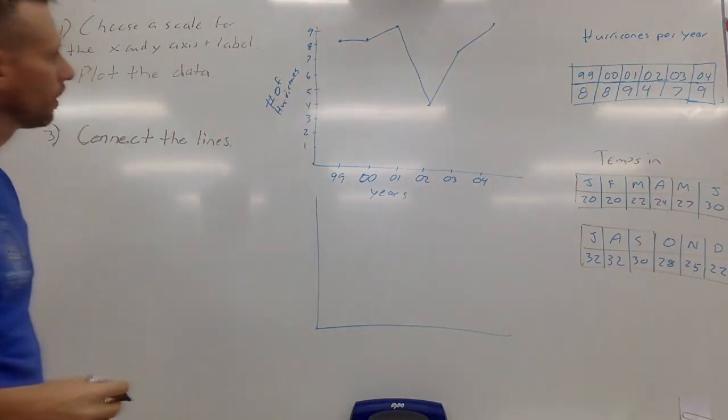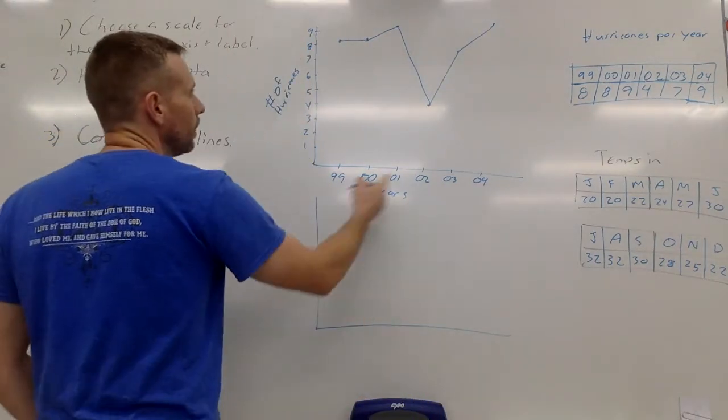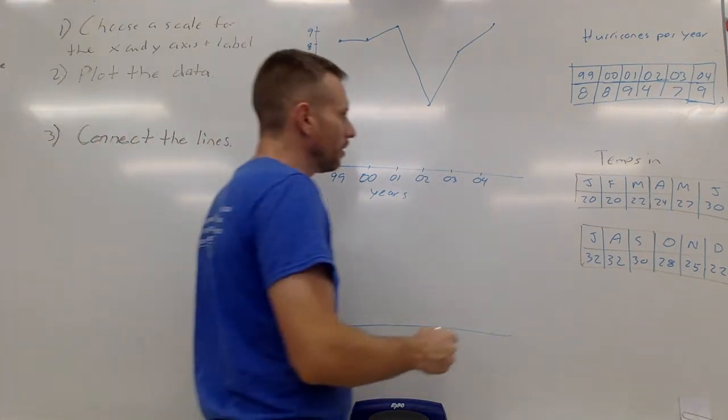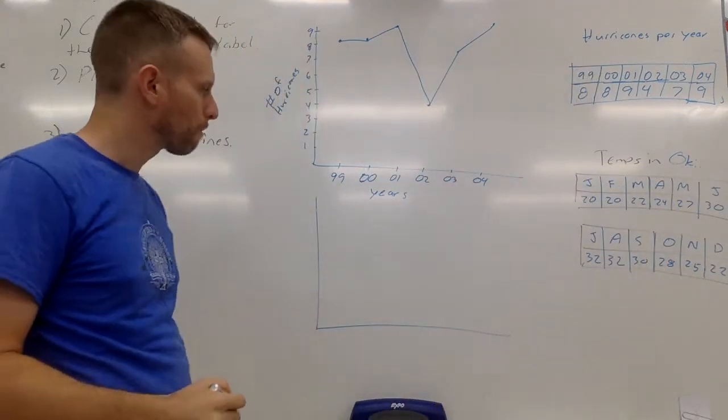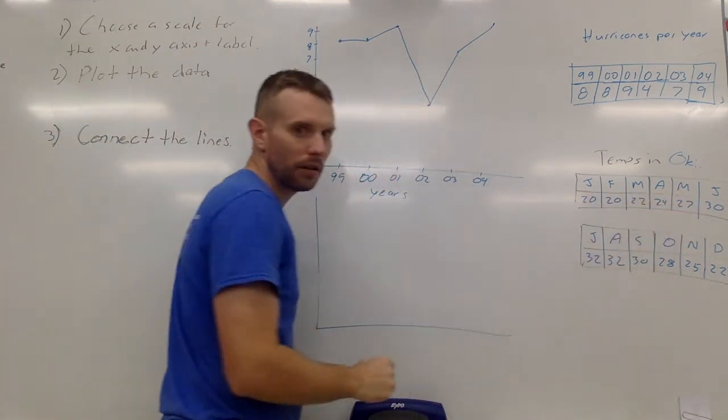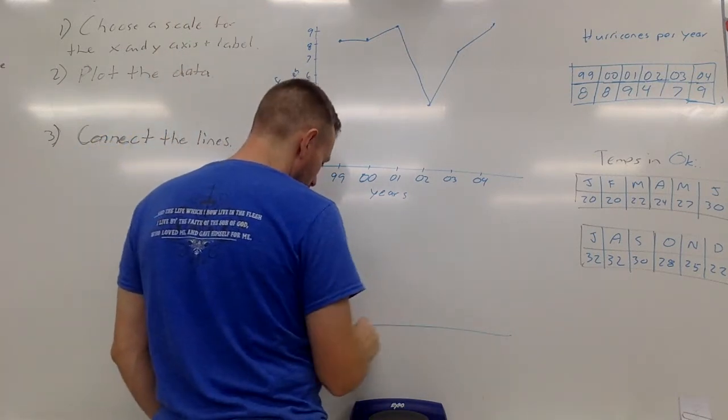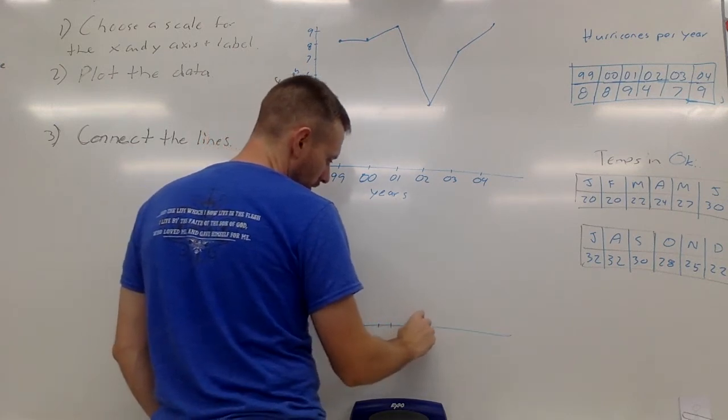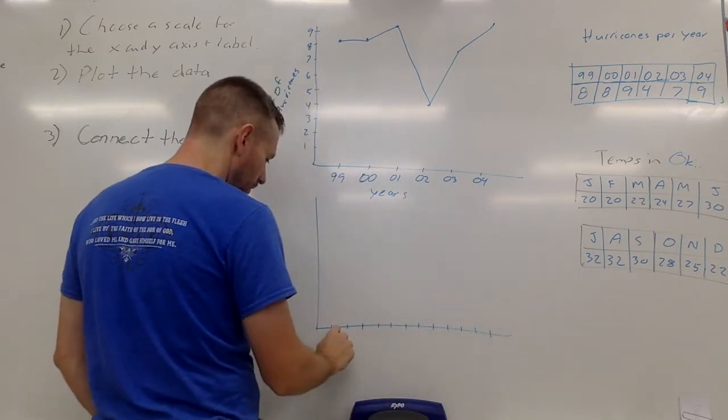Now let's move on to temperatures - this is temps in Okinawa, average temps in Okinawa. If you look at my data set, you can probably tell that the letters represent the month. So January is J, March is M, and so on. I'm going to make even increments: one, two, three, four, five for the months.